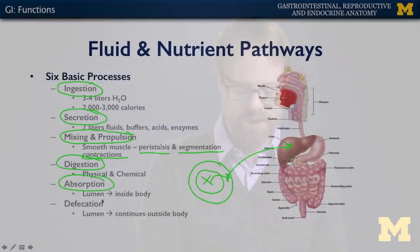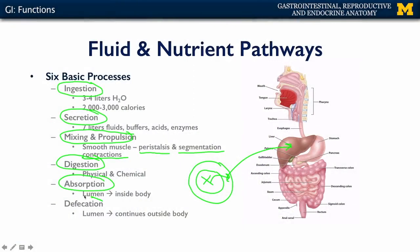Any materials within the lumen of the GI tract that are not absorbed are then dehydrated down — not totally, but largely — and turned into feces, which are then defecated from the rectum through the anal canal, out the anus, and outside of the body.